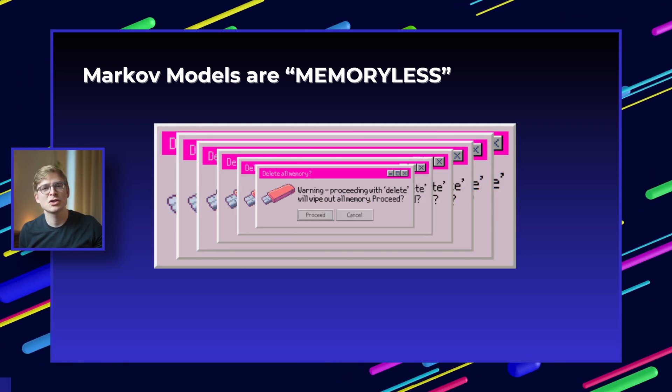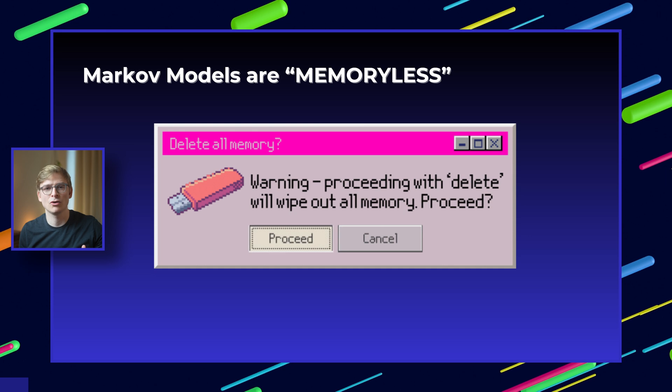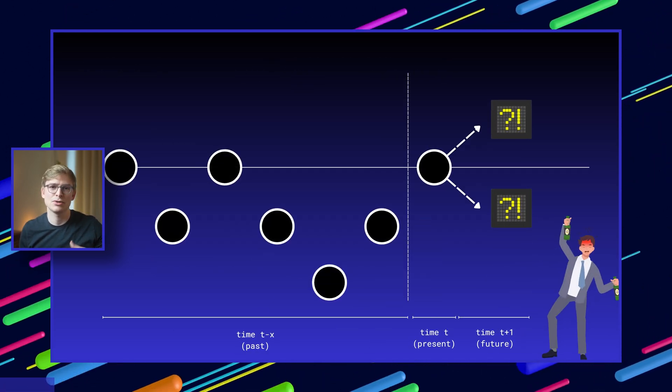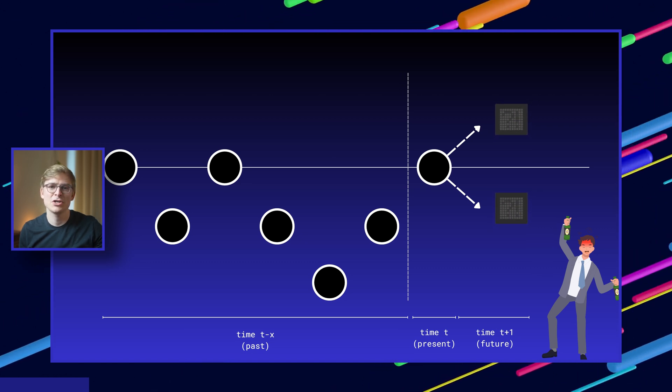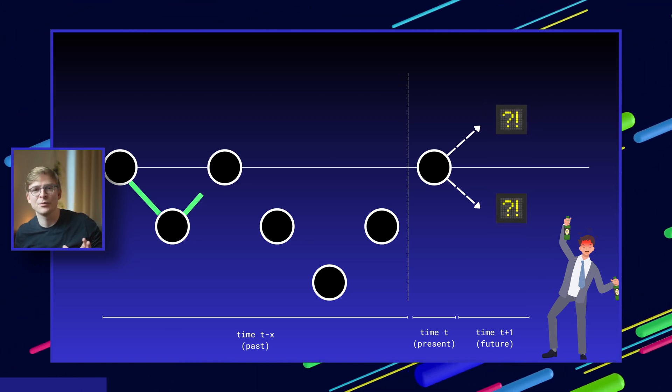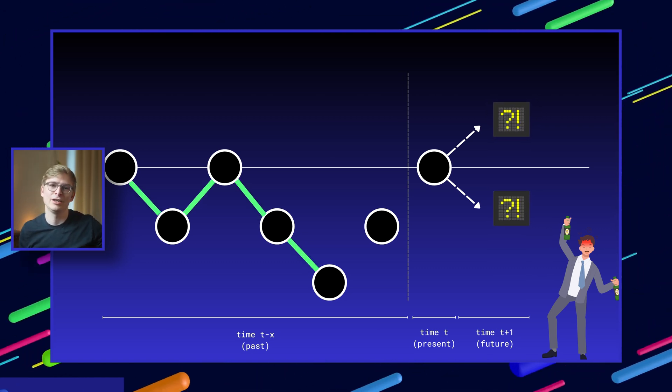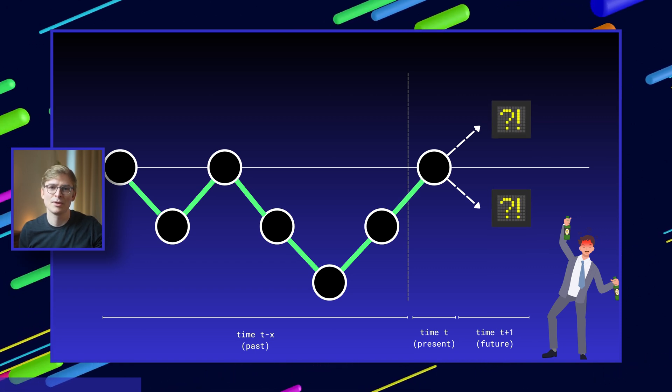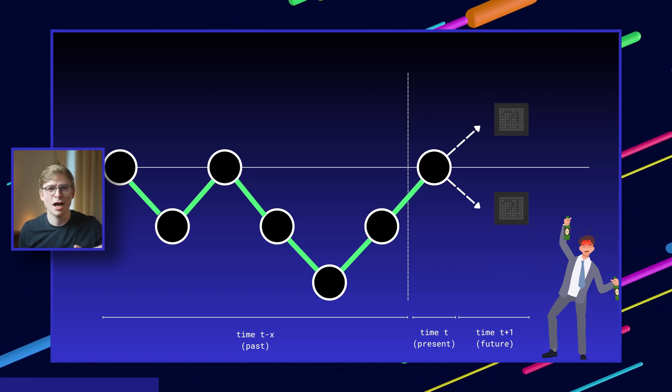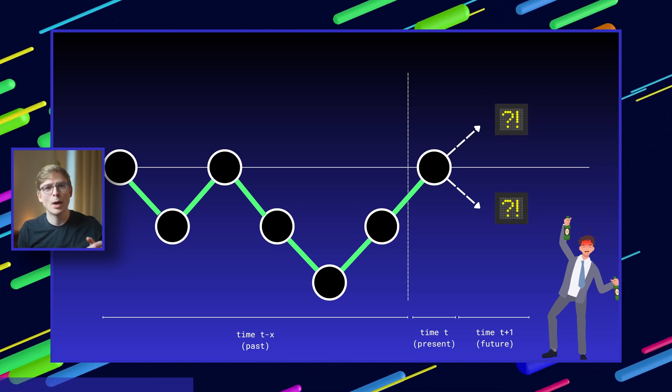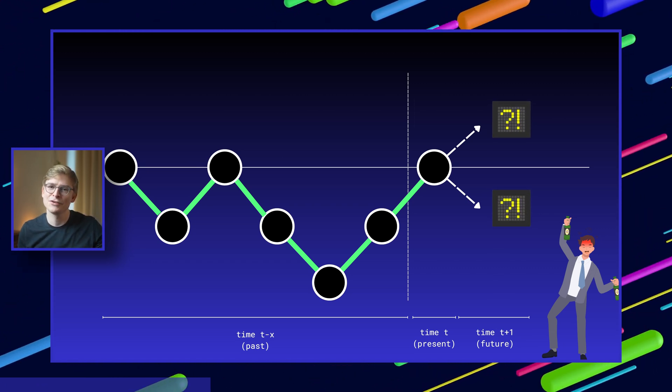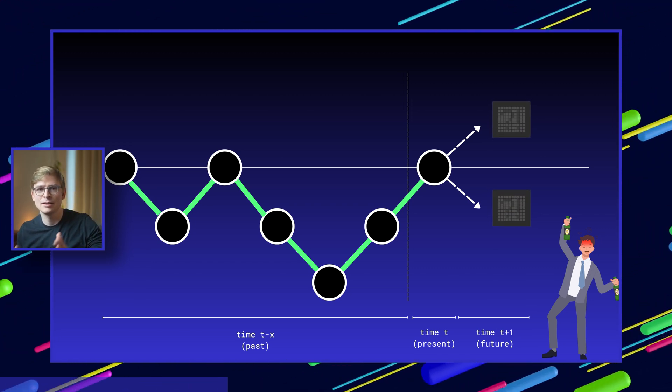Let me paint you a picture to illustrate the memoryless property of Markov models. Imagine a drunken person trying to find their way home after a long night out. Because of their intoxication, they're wavering from side to side, not entirely in control of where they go next. Let's assume they can already see their house and need to walk in a straight line to get there. However, the wavering causes them to deviate ever so slightly to the left or right with each step.